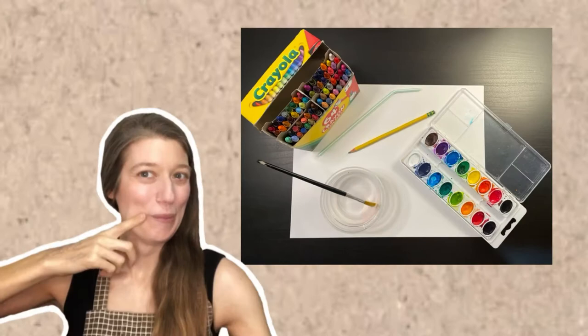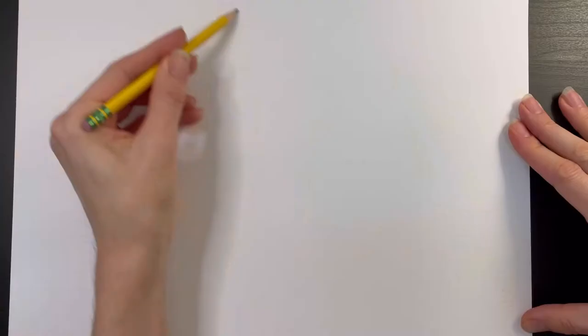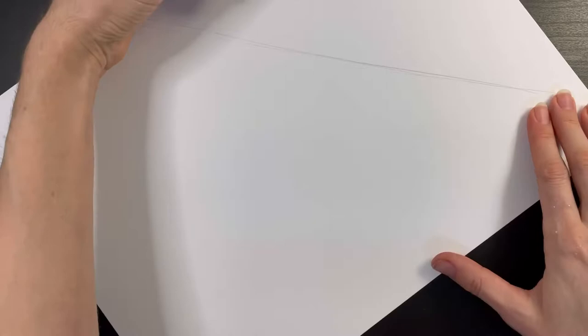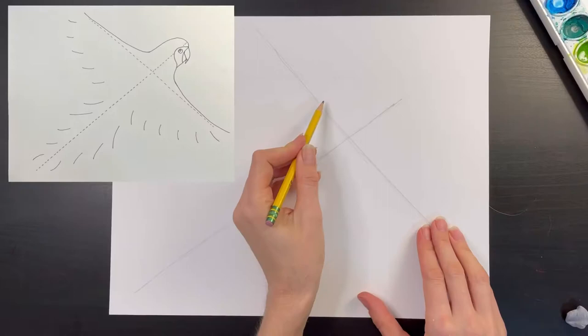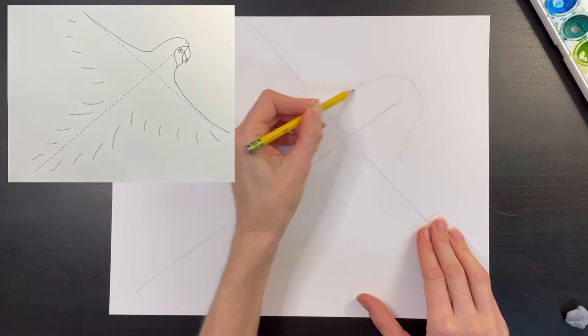I've got all the materials we're using today listed in the description below. I'm going to start by drawing a diagonal cross across my paper using light pencil marks. Now I'm going to pencil in a rounded half oval shape where I want the head to be. I'm going to use that cross as a guide to draw my wings on either side of the head.